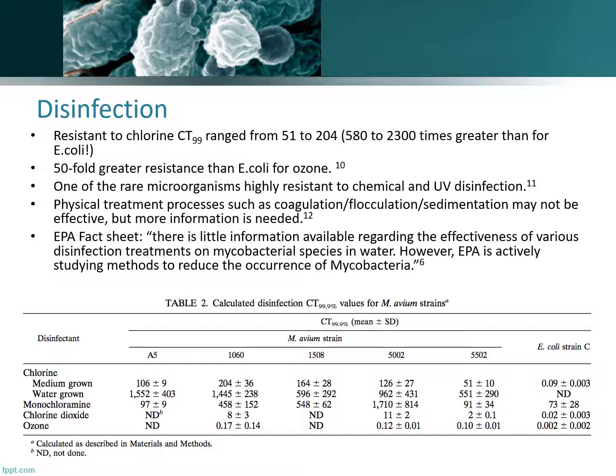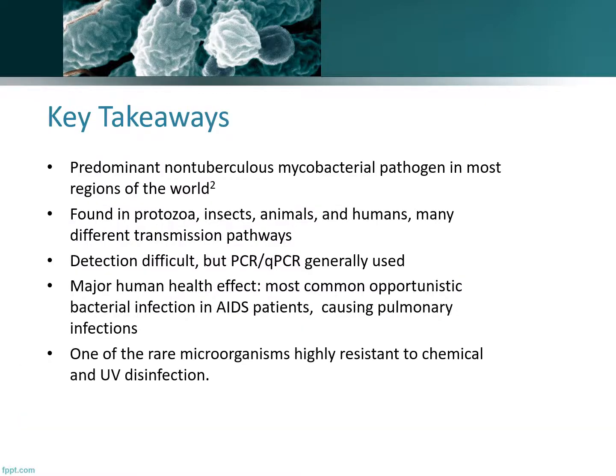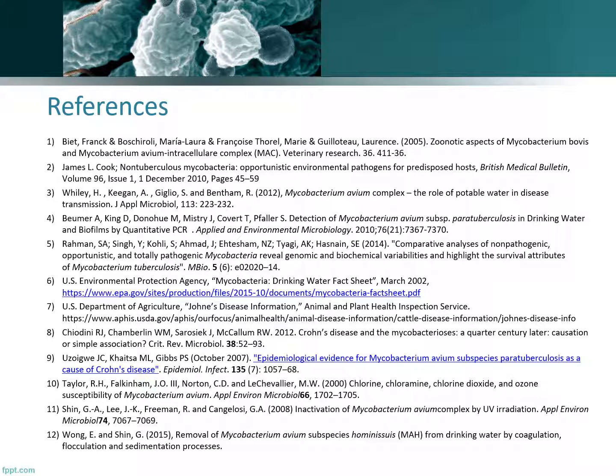And as you can see in the table below, some of the TT99 values surrounding that. Overall, the key takeaways: this is the predominant non-tuberculous mycobacterial pathogen in most regions of the world. It has found an incredible number of vectors and other pathways — from protozoa, insects, animals, and humans. While detection is enormously difficult, we typically use PCR or qPCR. The major human health effect takeaway is that this is the most common opportunistic bacterial infection in AIDS patients and typically causes pulmonary infections. For disinfection and environmental engineering treatment, this is a rare microorganism that is highly resistant to chemical and UV disinfection. Thank you for your time, and for additional information you can see these references.